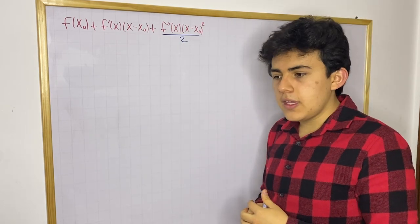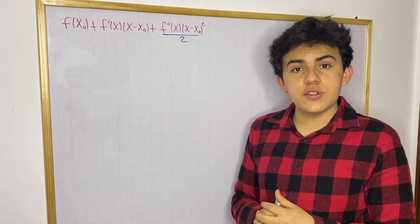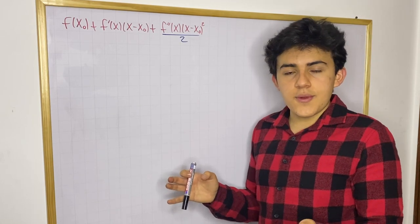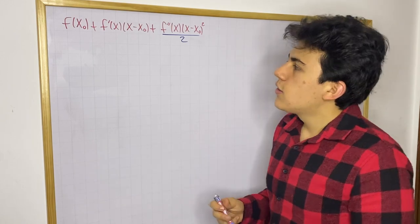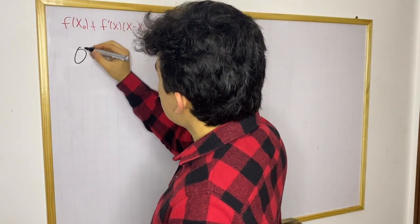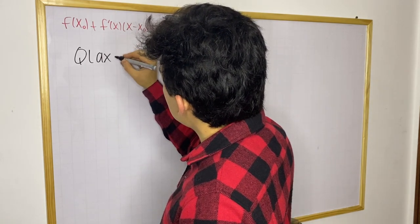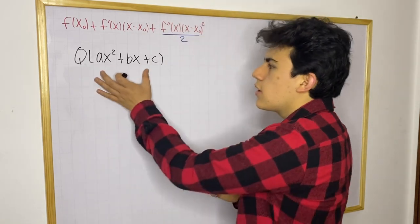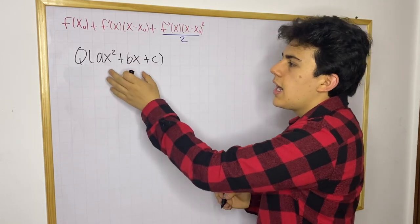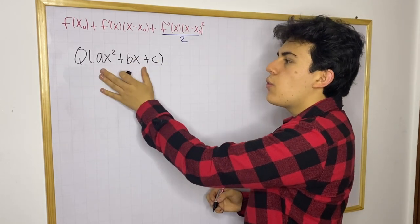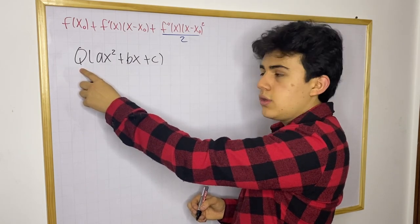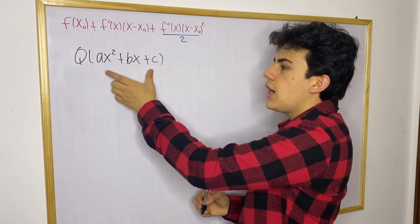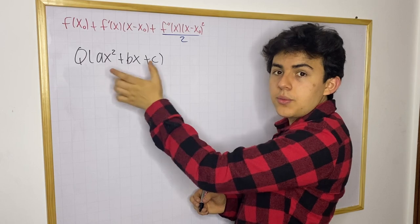So I want to ask you this question: what is the quadratic approximation of a parabola? Well, if we want to approximate a parabola near any point, the best approximation for that is going to be the parabola itself. So let's ask: what is the quadratic approximation of the parabola ax squared plus b times x plus c? This is a quadratic polynomial — just a polynomial — and it's going to give us a parabola. The notation I'm using is Q to define the quadratic approximation of any function.